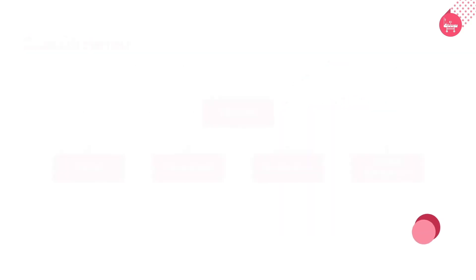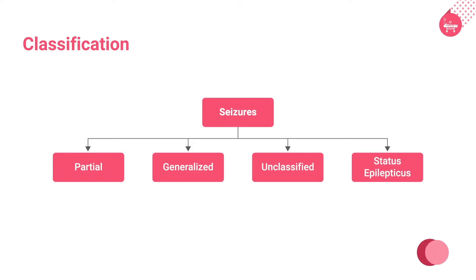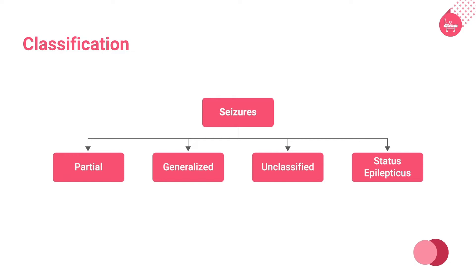Now let us talk about the clinical classification of epilepsy. According to the International Classification of Epileptic Seizures, and based on clinical description and electrophysiological findings, epilepsy is classified as partial seizures, generalized seizures, unclassified seizures, and status epilepticus.